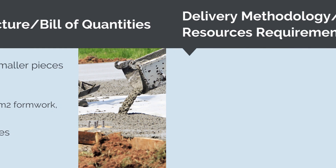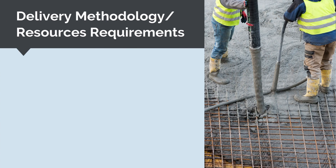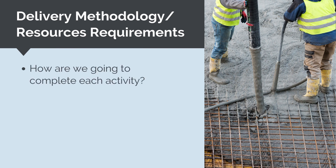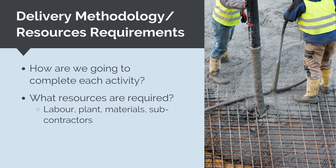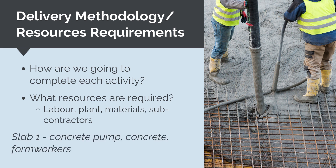For each activity in our WBS, we then need to understand what resources we need. We need to understand the delivery methodology — exactly how we are going to do the work and what is required to do it. The resources needed for each activity will be a combination of labor, plant, materials, and subcontractors. For example, for slab one, we would need concrete, a concrete pump, concreters, formworkers, and so on.